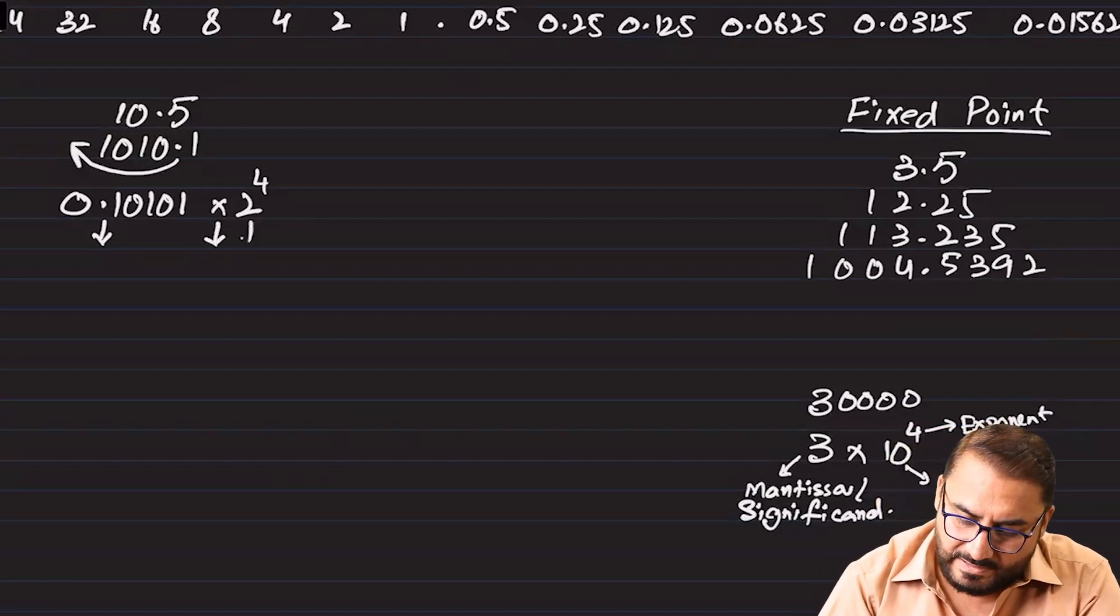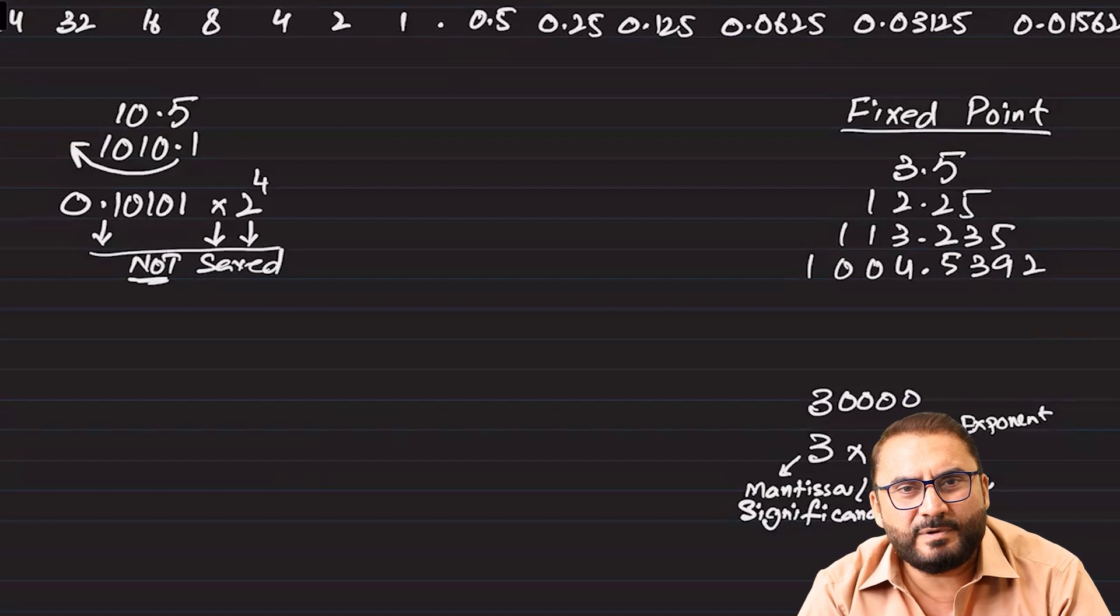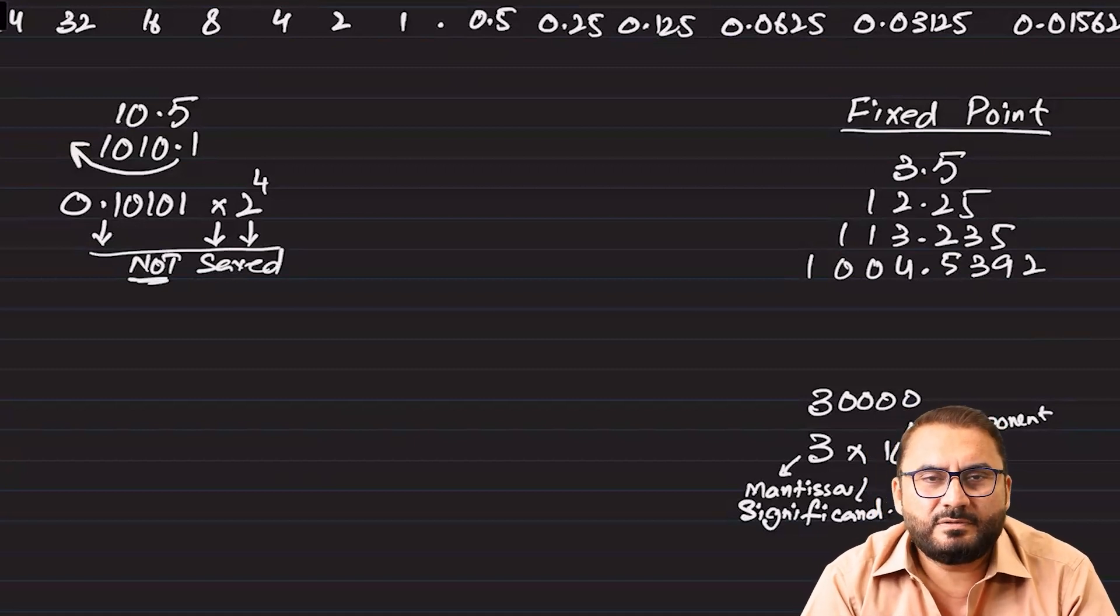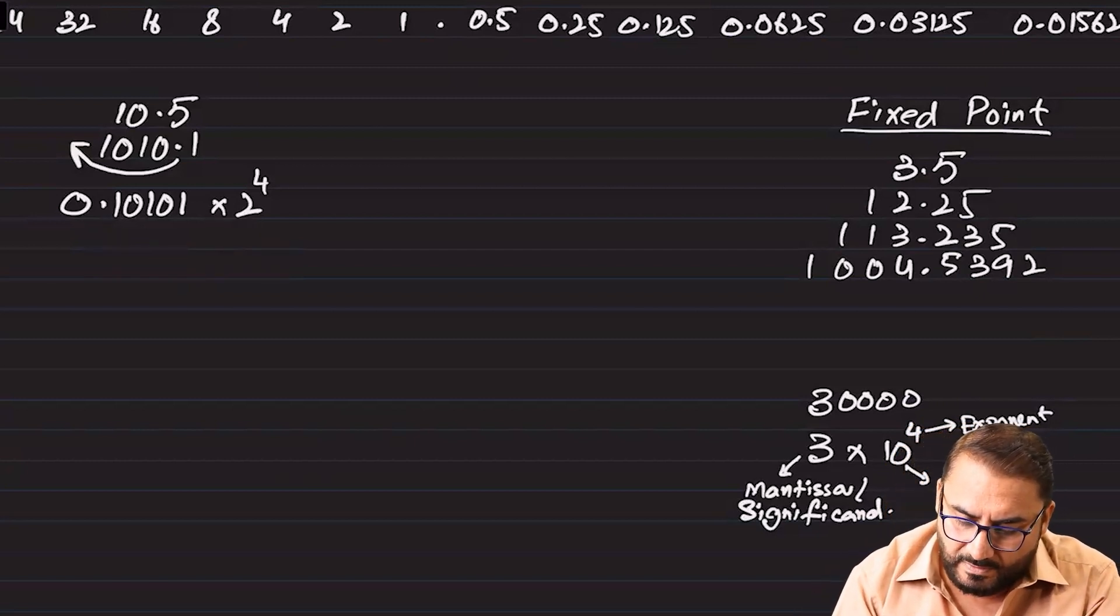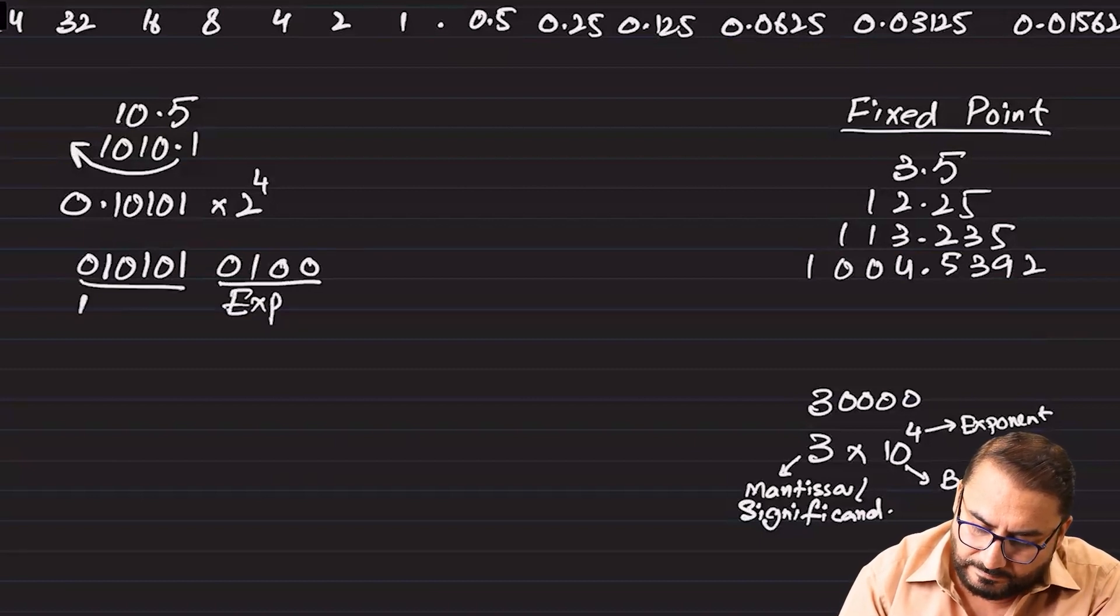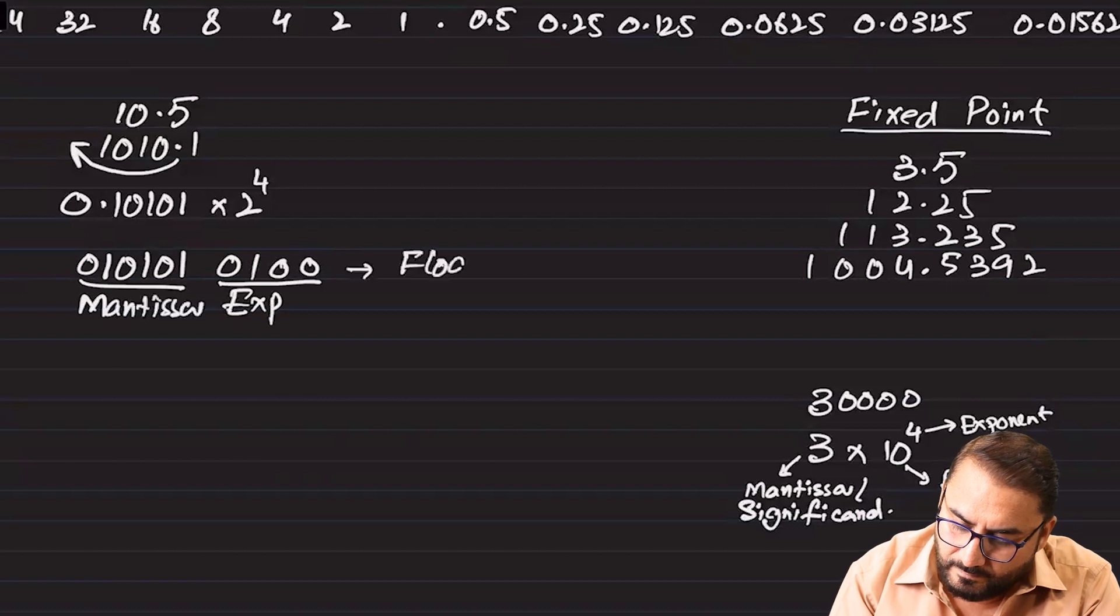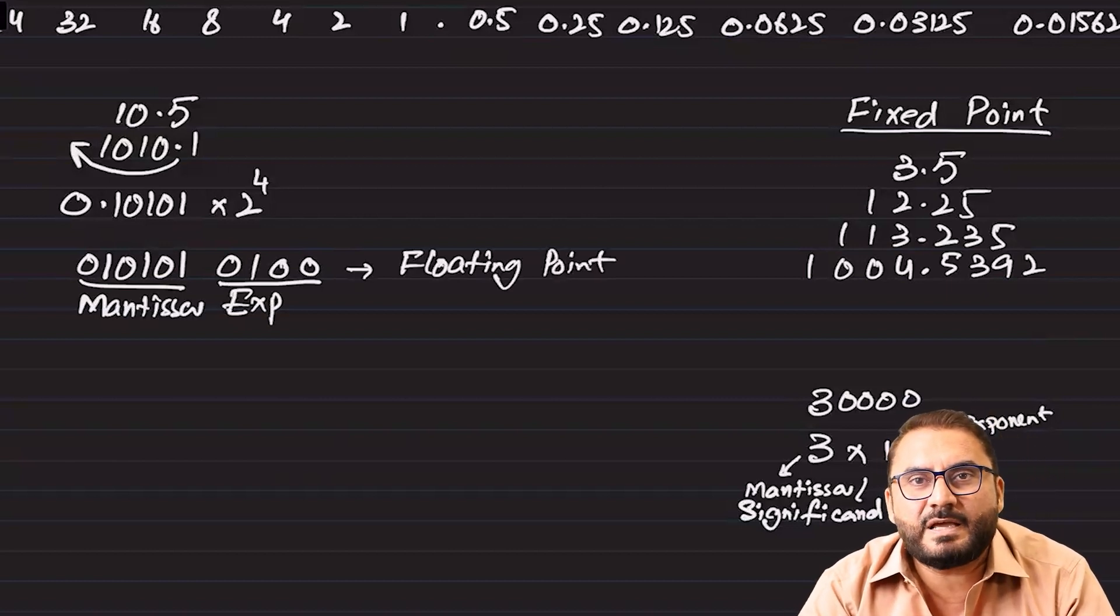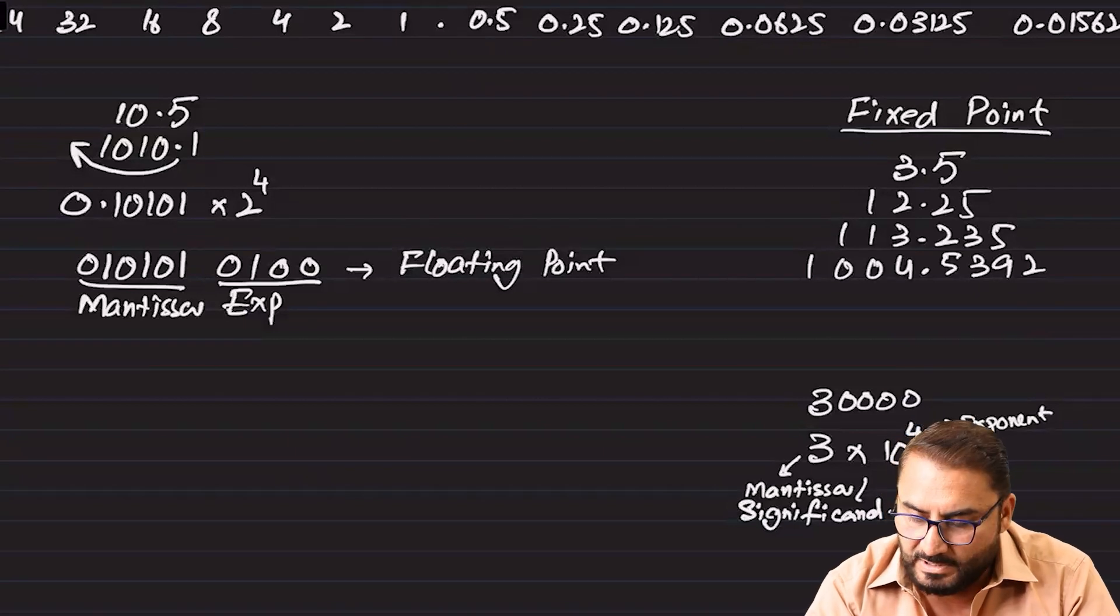This multiply sign and this base is not saved. These three are not saved because they are there, they are understood. Point lies between first two bits, there is a multiplication sign and base two. Why base two? Because this is basically the binary number. Now what we gonna save? We gonna save mantissa 010101 and the exponent 1 0 0, so this is basically exponent and this is basically mantissa. So this particular form is called floating point. If you would have done any of the languages like C language or Python, you would have an idea that all the real numbers there are called float. This is for that reason, this is floating point.